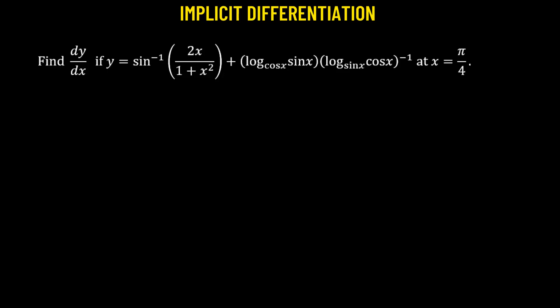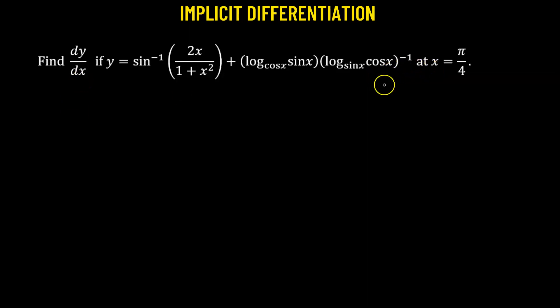We need to obtain the derivative of y with respect to x. Our function y is given in its implicit form, and we also need to find the value of the derivative at a specific value of x, which will be at π/4. So let's begin.